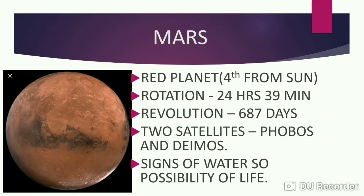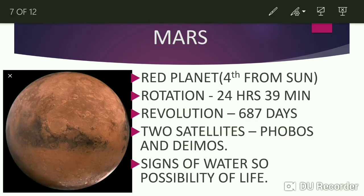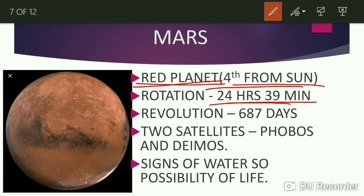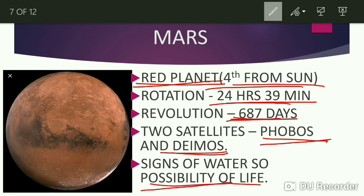Next is Mars. Mars is the red planet and it is fourth from the sun. Rotation time taken by Mars is 24 hours 39 minutes. Revolution time taken by Mars is 687 days. There are two satellites of Mars, and these are Phobos and Deimos. There is a sign of water on Mars, so it can be said that there is a possibility of life on Mars.